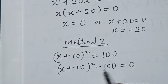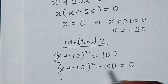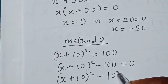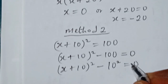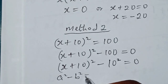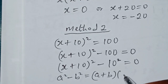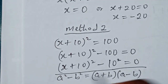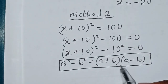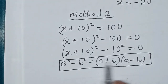We now approach this using the difference of squares identity: a² − b² = (a + b)(a − b). We can simplify (x + 10)² − 100 as (x + 10)² − 10², which equals 0, and then apply this identity.